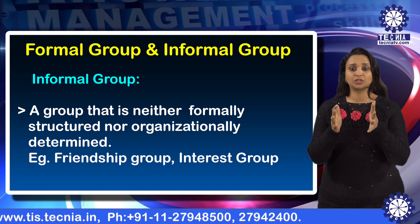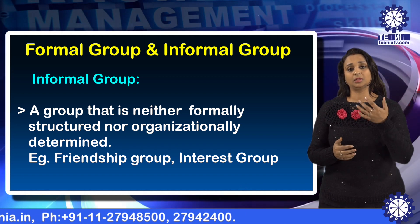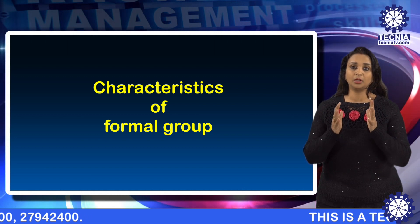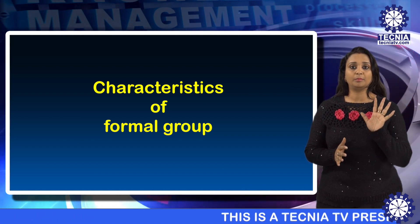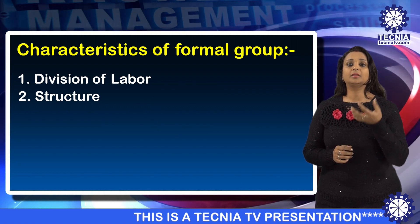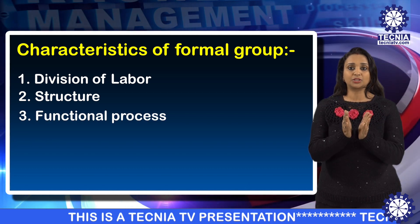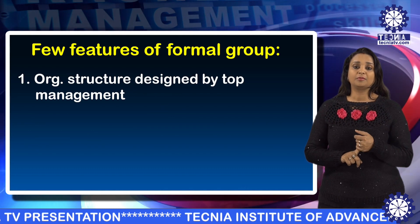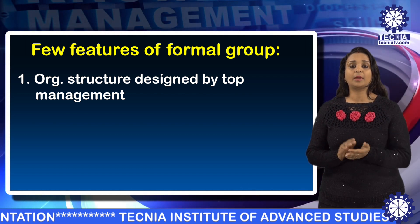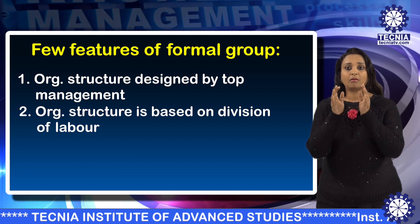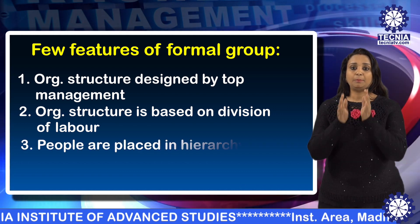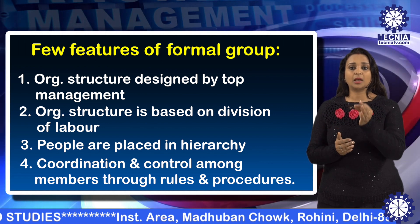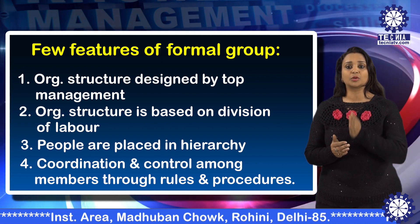Informal groups are created because of social and psychological forces operating at the workplace. The members of these groups create them for their own satisfaction and they are not regulated by organizational rules and regulations — like friends at the workplace. The characteristics of formal groups are built on four main pillars: division of labor, structure, functional process, and span of control.